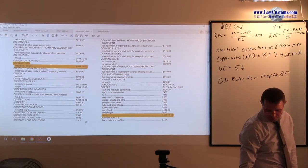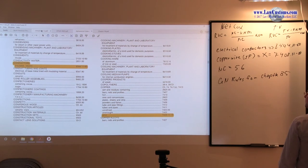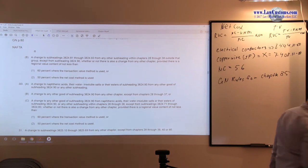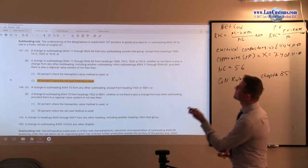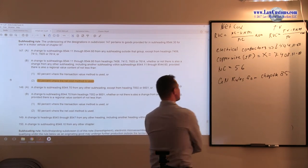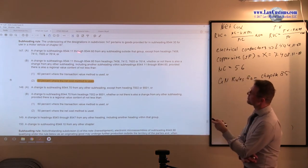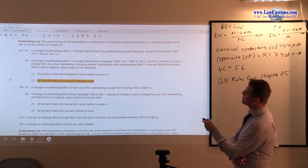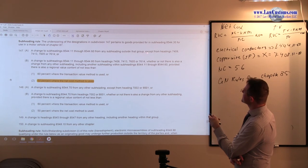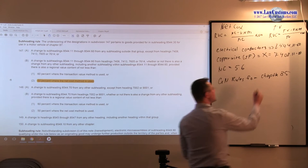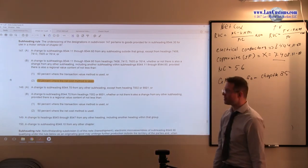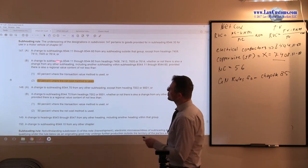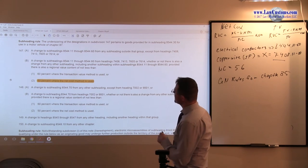The next step is we go to the rule for chapter 85. We are going to go to general note and we are going to look up the rule. Again, I will be using the shortcut. Here we see paragraph 147. We have 85.44 subheadings 11 through 60, which is this one. Paragraph A says a change to subheading from any subheading outside that group, except from heading 7804. And heading 7804 is precisely description of the copper wire. So for us paragraph A would be problematic. But we are not done yet because we have an OR provision because 7804 is a disqualifier.